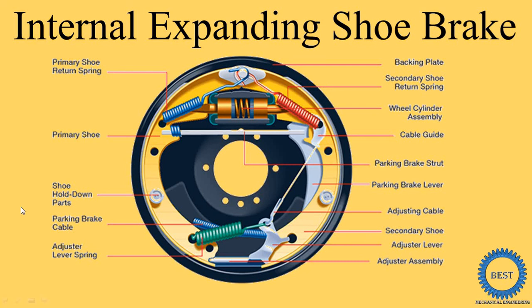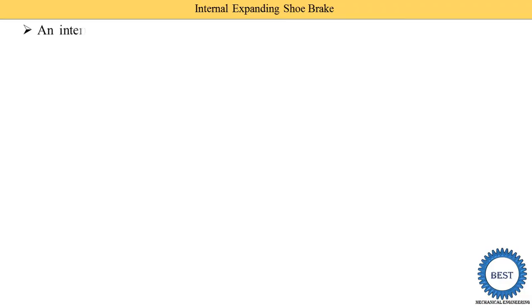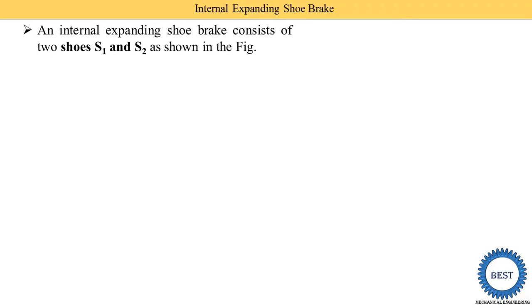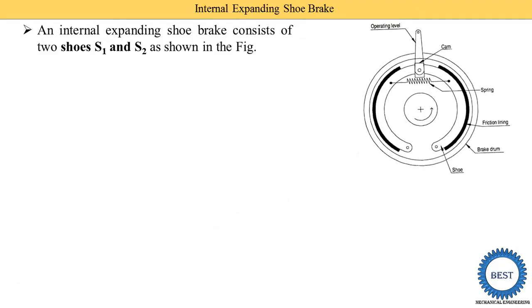In this video, I explain the internal expanding shoe brake. This brake consists of two shoes, named shoe S1 and shoe S2, as shown in the figure. This is the diagram of the internal expanding shoe brake.